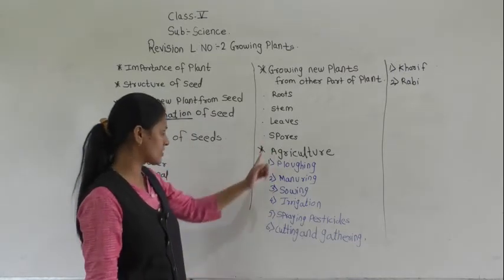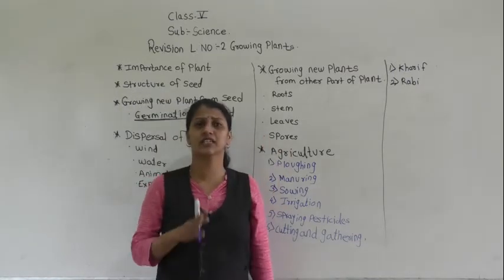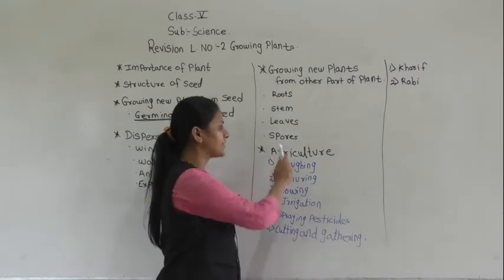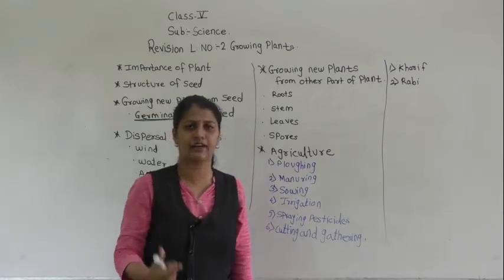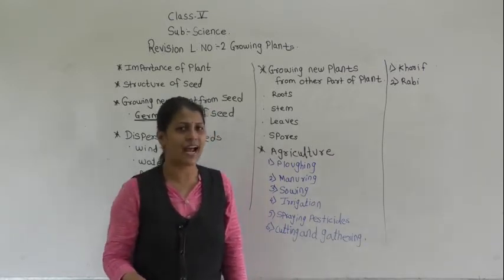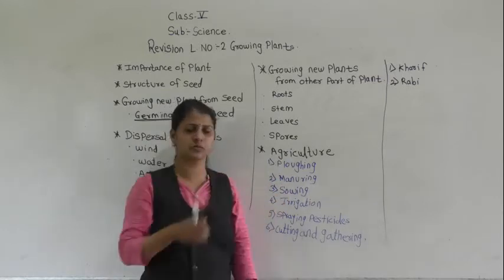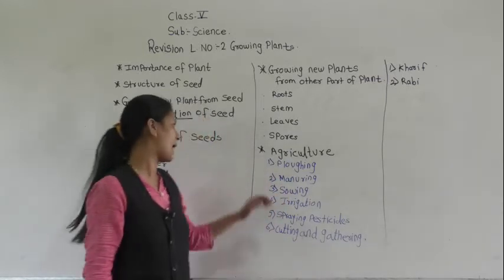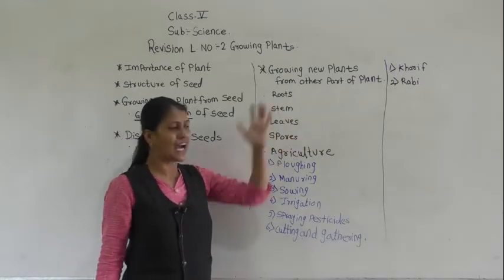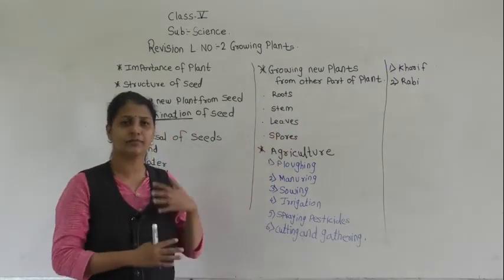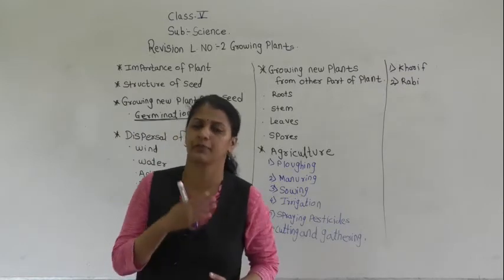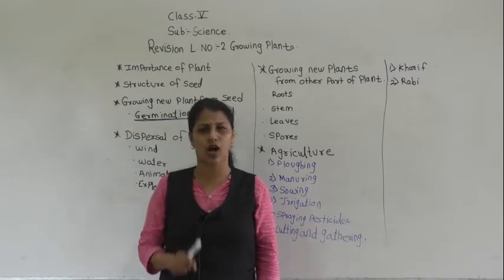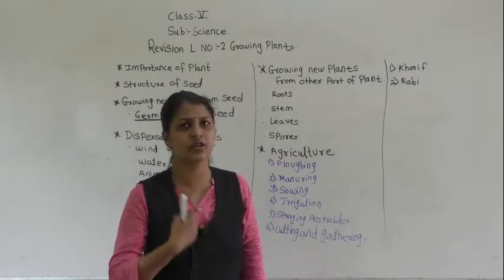There are some plants which do not bear a seed — they have spores. These plants grow with the help of spores. For example, ferns and mosses. So the process of growing plants from vegetative parts is called vegetative propagation.